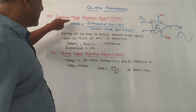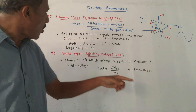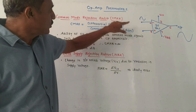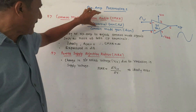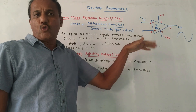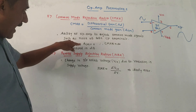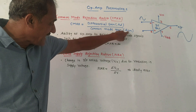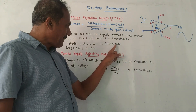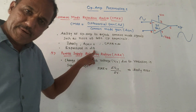The next important parameter is CMRR — Common Mode Rejection Ratio. It is the ratio of differential gain AD to common mode gain ACM. This value represents the ability of the op-amp to reject common mode signals, such as noise present at both input terminals. Ideally the value of common mode gain ACM is zero, so CMRR should be infinity. This value is always expressed in dB (decibels).